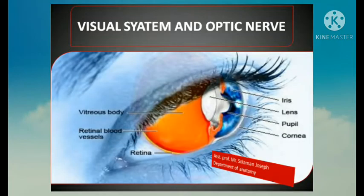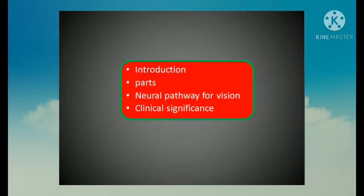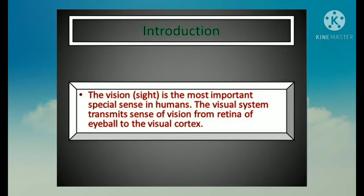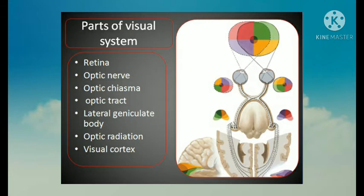Good morning. Today we are going to learn about the visual system and optic nerve. In this session we are dealing with the introduction, neural pathway for vision, and clinical significance. Vision or sight is the most important special sense in humans. The visual system transmits the sense of vision from the retina of the eyeball to the visual cortex. The parts of the visual system include the retina, optic nerve, optic chiasma, optic tract, and lateral geniculate body.